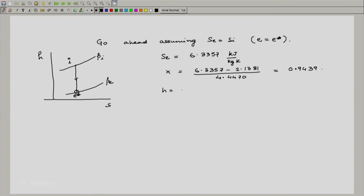What is H? It is very simple: we use this x multiplied by HFG, which is the same HFG as before, and add HF. Both of these are at 1 mega Pascal, and we get this as 2664.1 kilojoule per kg. This is H e. We also would like to calculate the specific volume because we have been asked to find out the velocity and the area. We get V e here, which is the specific volume, 0.18352 meter cube per kg.